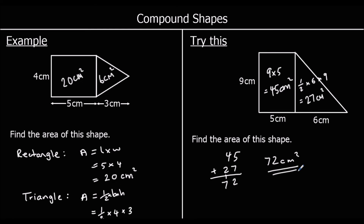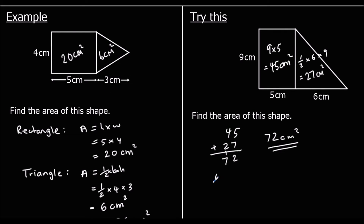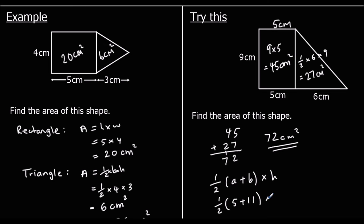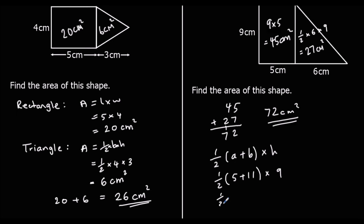Alternatively, using the trapezium formula: area = half the sum of the parallel sides times the distance between them. The parallel sides are 5 and 11 (since 5 plus 6 = 11), and the height is 9. So half of (5 + 11) = half of 16 = 8; and 8 times 9 is 72 cm². Both methods give the same answer.